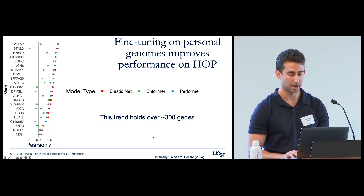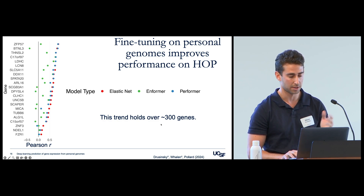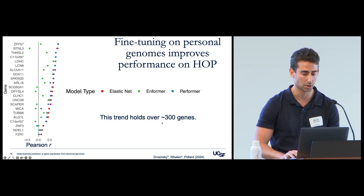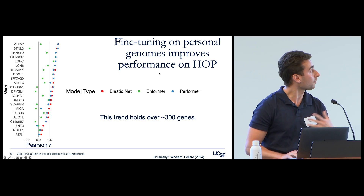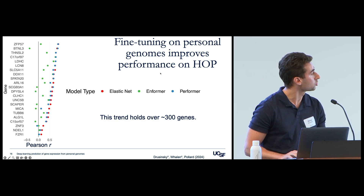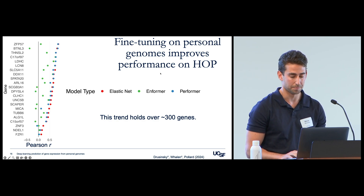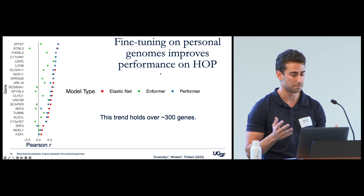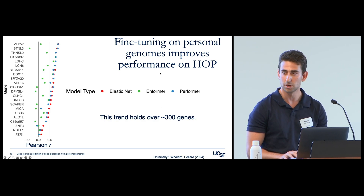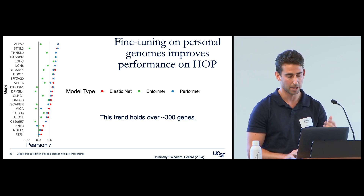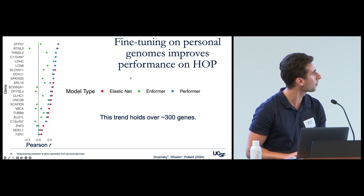We've tried training and evaluating on up to 300 genes and find that this trend holds over those genes. Overall, fine-tuning on personal genomes seems to improve Informer's ability to overcome previously documented issues and better explain expression variability across people.